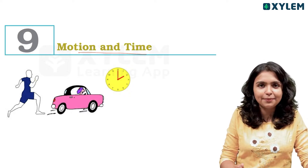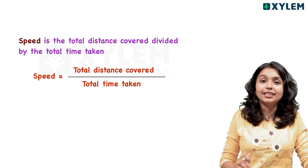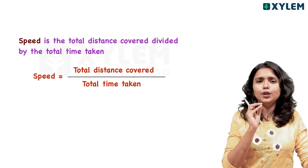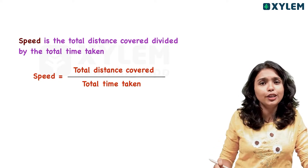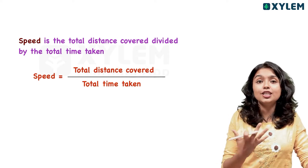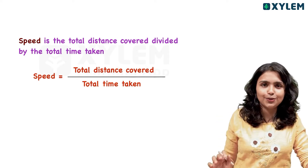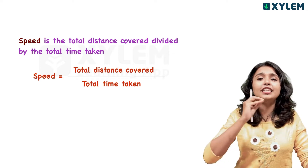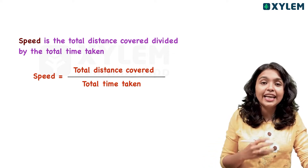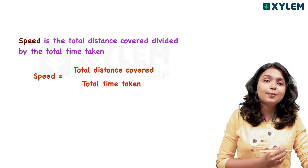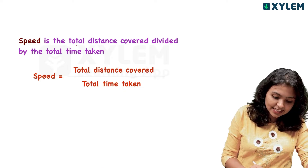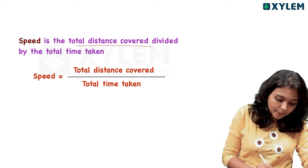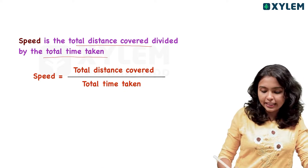Now we are going to talk about the name of the unit. In this chapter, we are going to talk about one equation. How do we calculate the speed? It is the total distance covered divided by the total time taken.